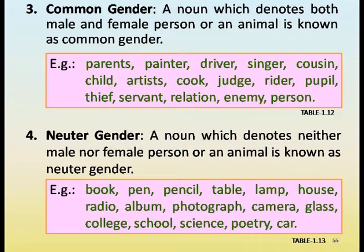Neuter gender examples: book, pen, pencil, table, lamp, house, radio, album, photograph, camera, glass, college, school, science, poetry, car.